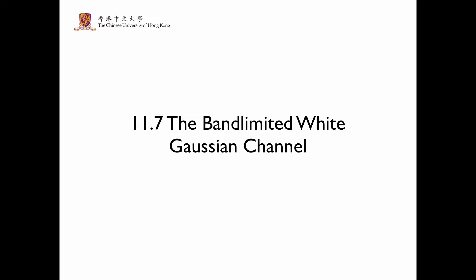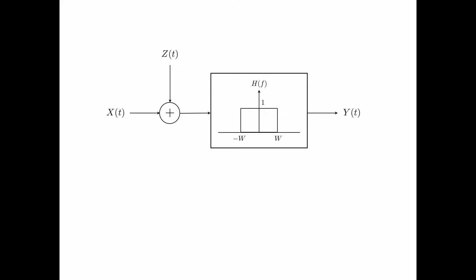In section 11.7, we discuss the band-limited white Gaussian channel where transmission is in continuous time. Consider this model for the channel where the input is the process x of t, and the noise process z of t is added to x of t. The sum of the two signals is passed through a low-pass filter with bandwidth equal to w, and the output of the filter, y of t, is the output of the channel. In any real system, the output is in some way band-limited, so this is a very reasonable model to look at.